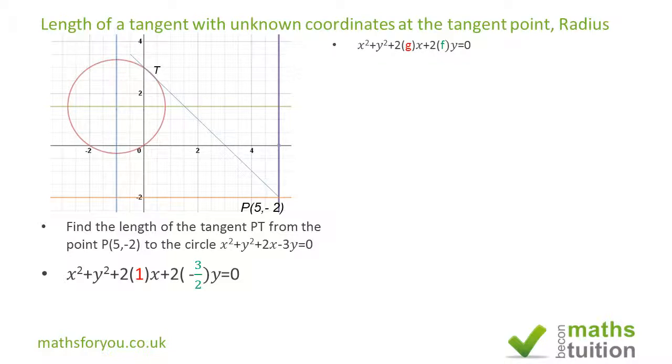So g = 1 and f = -3/2, which means -g = -1, and the x-coordinate of the center of the circle is -1. Similarly, the y-coordinate of the center is 3/2.